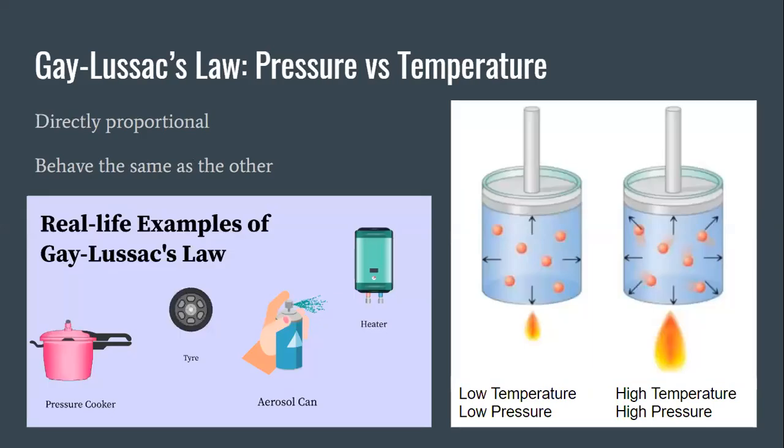And the last law is Gay-Lussac's law which compares pressure to temperature. Again these are directly proportional and they behave the same as one another. So at low temperatures there's low pressure, the particles are moving slower and there's fewer collisions. At higher temperatures there's higher pressure. Notice the additional arrows on that side of the diagram. Those particles are moving faster at a higher temperature and colliding more often making that pressure go up. And again there's a few real world examples to the left there. A pressure cooker is like an Instapot. Some of you might have them at home.